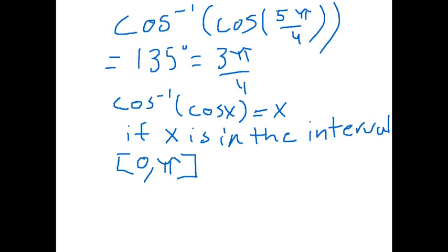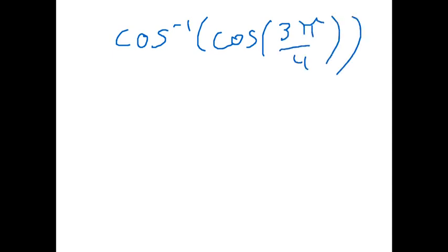Now I'll rewrite it so it'll make a little bit more sense. Here we have inverse cosine of cosine of 3π over 4. So this is the exact same thing as what we started off with, which was inverse cosine of cosine of 5π over 4.